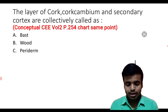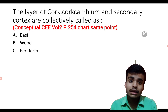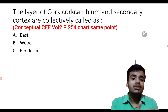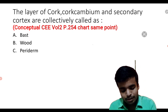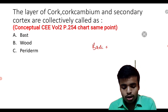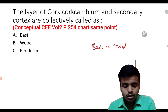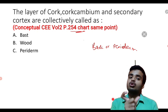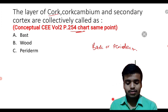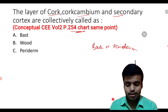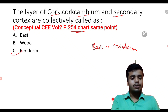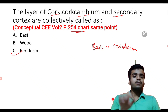The layer of cork cambium and secondary cortex: these are all dead layers because they are outside the vascular layer. Collectively they form the bark, also called Periderm. As mentioned in Conceptual C book: Periderm = Cork + Cork cambium + Secondary cortex. These are collectively known as Periderm.